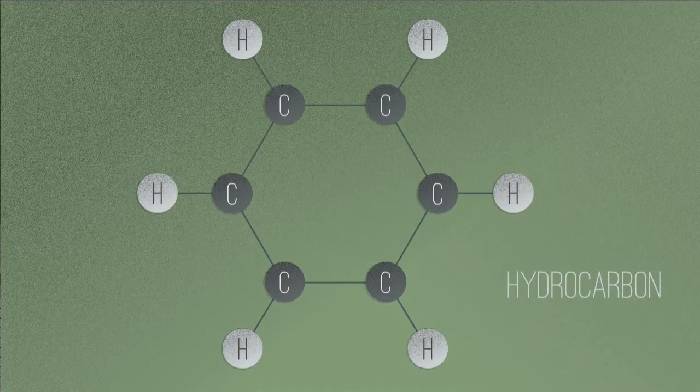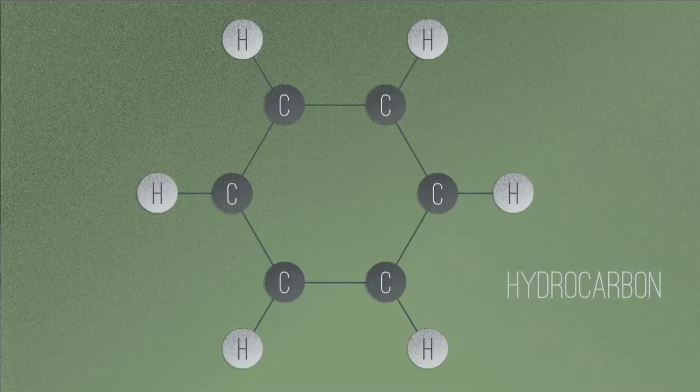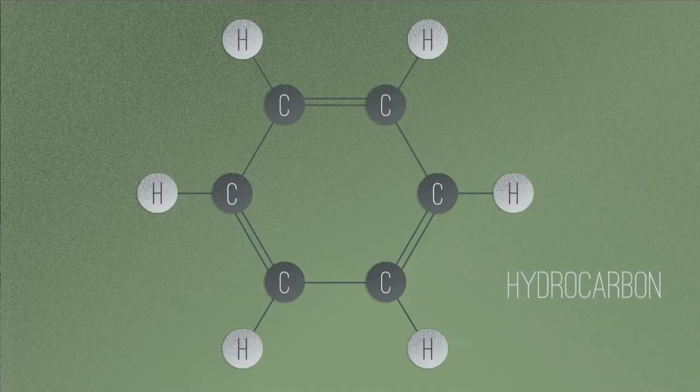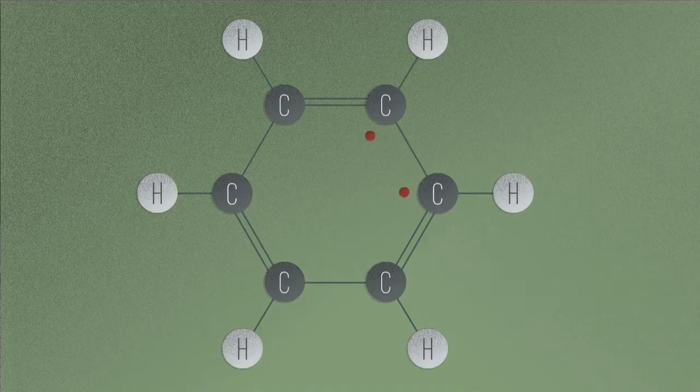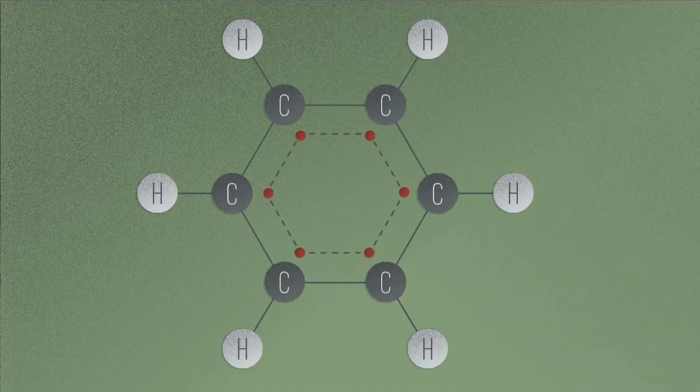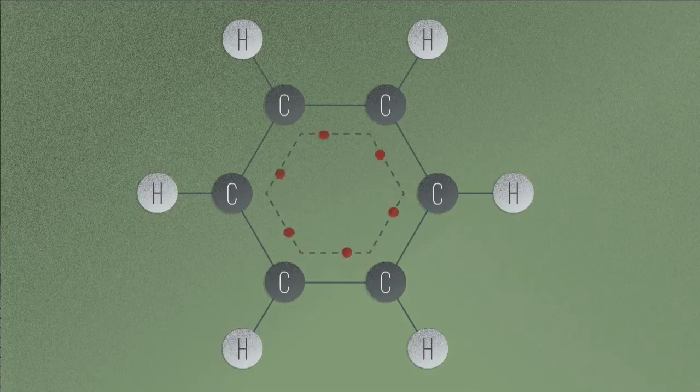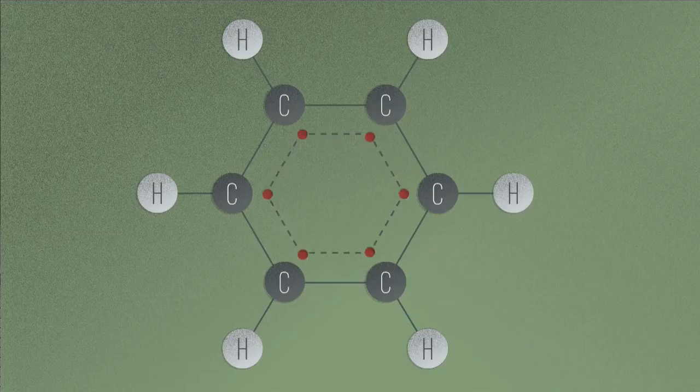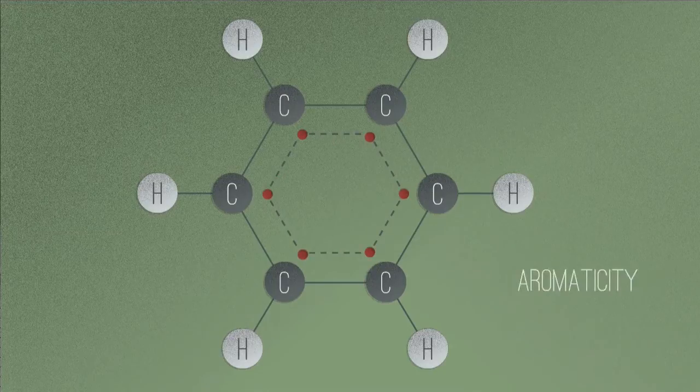Carbon usually forms four single covalent bonds and these carbons at the moment only have three. The molecule now does something very special. The one unpaired electron from each carbon becomes conjugated into the ring. This means they have free movement around all six carbons and this gives benzene the property of aromaticity.